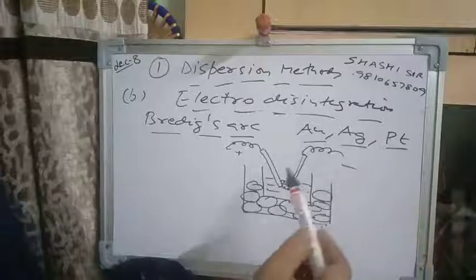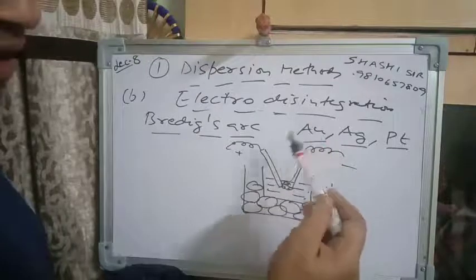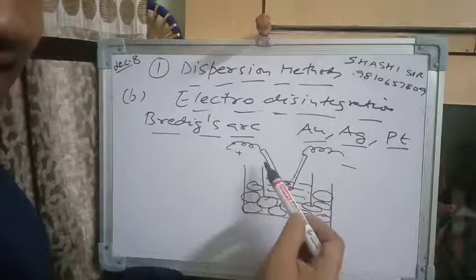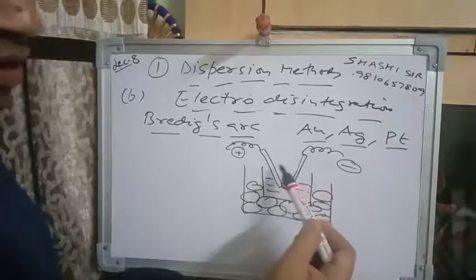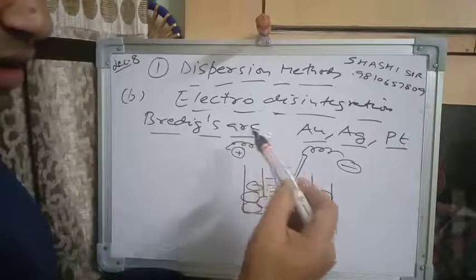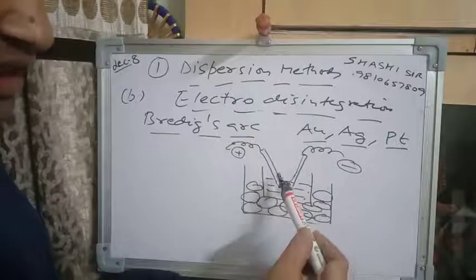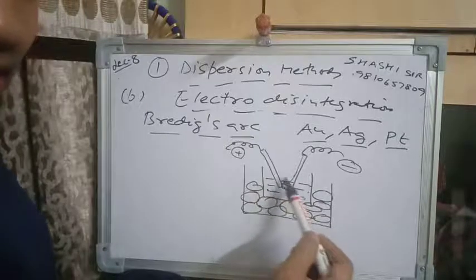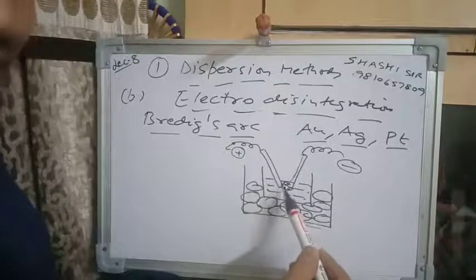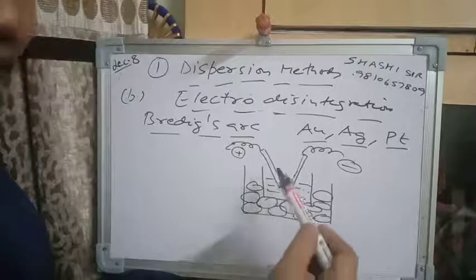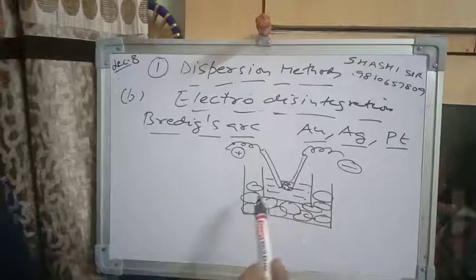To summarize Bredig's Arc Method: an electric arc is set up between metallic rods of gold, silver, or platinum immersed in ice-cold water. The heat of the arc converts the metal into vapors, which are immediately condensed in the ice-cold water to form colloidal particles. The colloidal sol is stabilized in the ice-cold water. This is an important method for the preparation of colloidal particles of gold, silver, and platinum.